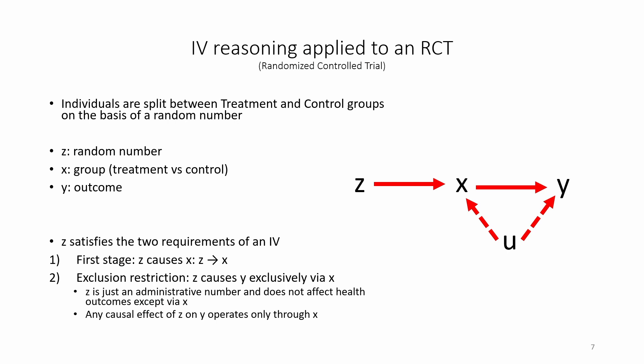Any causal effect of Z on Y operates only through X. So, we consider that the first stage and exclusion restriction conditions are plausible.